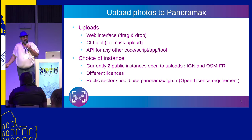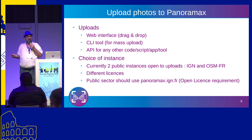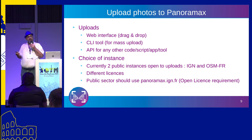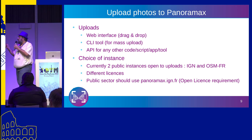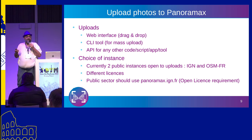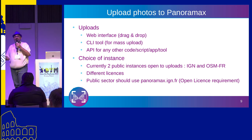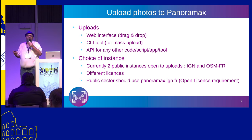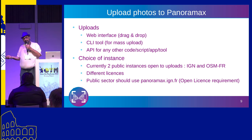To upload photos to Panoramax, we have a web interface with drag and drop, a command line tool, and an API. If you want to write code or integrate uploading pictures to a Panoramax instance, it's simply an HTTP POST API call to our server — very simple to implement. Currently there are two public instances open for uploads: one from the Geographic Institute and one set up by OpenStreetMap France. They have different licensing.